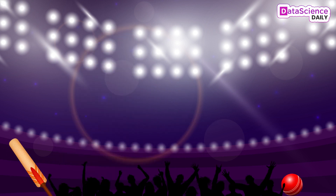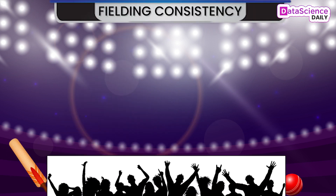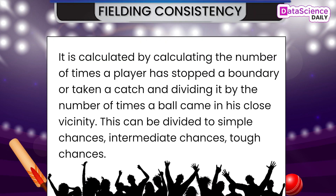Some of the fielding metrics used for analysis are: Fielding Consistency — calculated by dividing the number of times a player has stopped a boundary or taken a catch by the number of times a ball came in close vicinity. This can be divided into simple chances, intermediate chances, and tough chances.